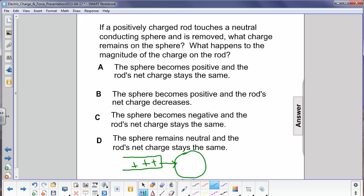What charge remains on the sphere? What happens to the magnitude of the charge on the rod? What will happen is once these two objects are connected, the charge will flow from the positive charge here until it gets as far away as it can, over to this sphere.